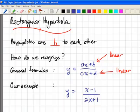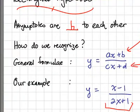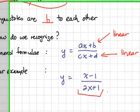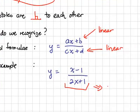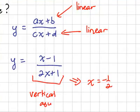Before we start drawing our rectangular hyperbola, you need to know what the asymptotes are. For a rectangular hyperbola, there are only two asymptotes: one vertical and one horizontal. It is very easy to get the vertical asymptote — you look at the denominator expression. If you let the denominator equal to zero, you will have x equals to negative half. This gives you the vertical asymptote, which is obtained from the denominator.